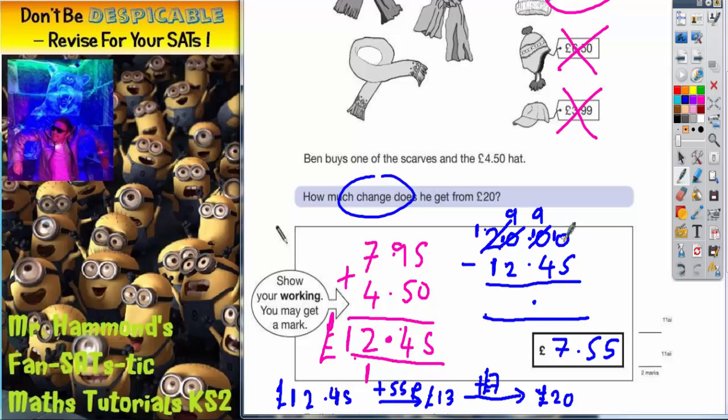And now we should be able to do it. 10 take away 5 is 5, 9 take away 4 is 5, 9 take away 2 is 7, and 1 take away 1 is nothing. So there we have it, £7.55. Either way you should get the same answer.